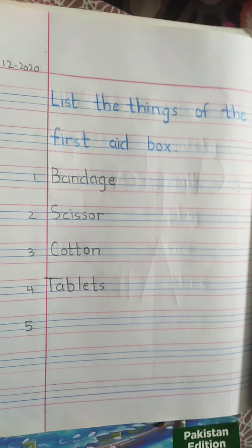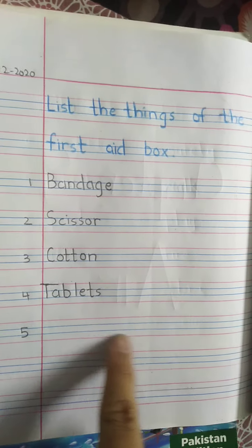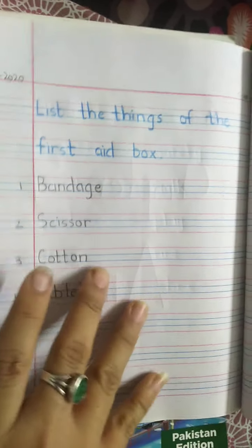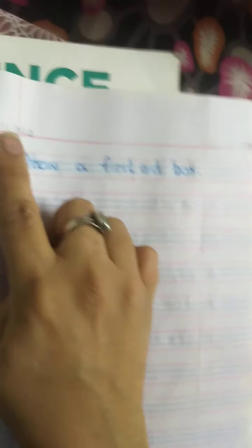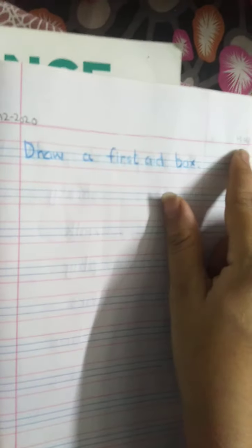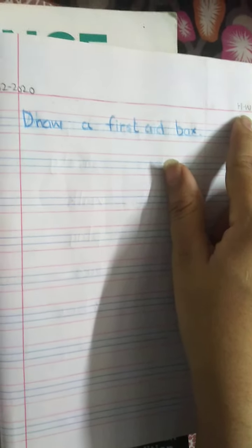You have to complete number five by yourself. Now come to the next page and write HW on the top. This is your homework: draw a first aid box, or you can draw the things which are included in the first aid box.